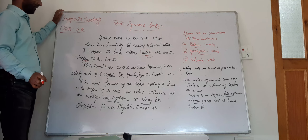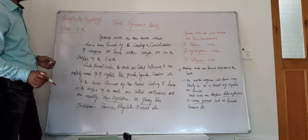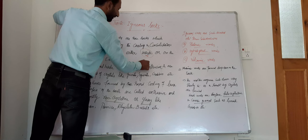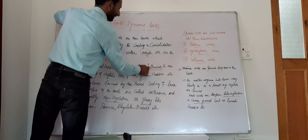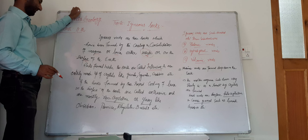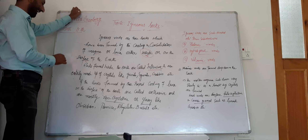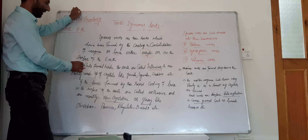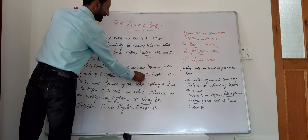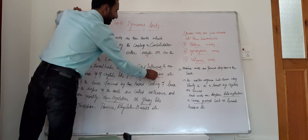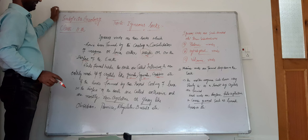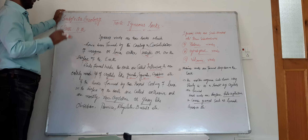Rocks formed inside or within the surface of the earth are called intrusive igneous rocks, and are entirely made up of crystals. Examples include granite, syenite, and gabbro — these are three types of intrusive igneous rocks.